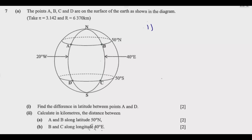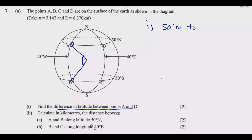The question is asking us to find the difference in latitude between A and D. So A is here and D is here. If you come and connect to the center, this angle is the difference in latitude, which will be in degrees. A is on 50 degrees north, and D is on 50 degrees south — they are on opposite hemispheres. So we just add the two: 50 degrees plus 50 degrees equals 100 degrees.